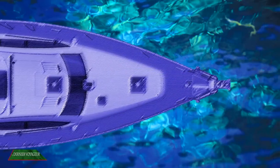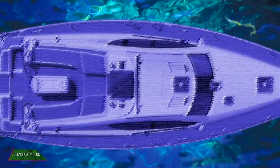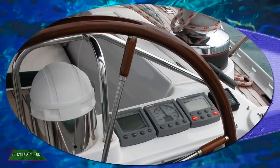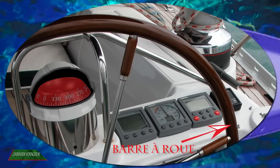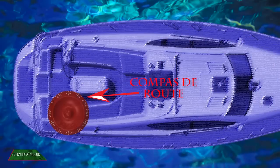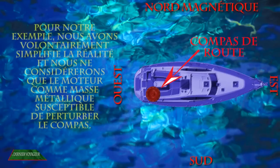Sur les bateaux, un compas de route est fixé à l'extérieur et permet au barreur de suivre un cap. Sur cette illustration, il est placé derrière la barre à roue d'un voilier. A l'installation, un technicien effectue un premier ajustement appelé compensation pour minimiser les erreurs. Bien que le compas soit correctement réglé, les masses métalliques à bord, le moteur par exemple, le perturbe. Le nord du compas va donc dévier par rapport au nord magnétique et cette déviation va dépendre du cap suivi par le bateau.